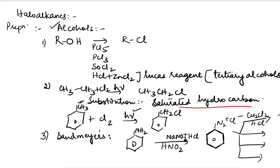For example, to prepare chlorobenzene we use Cu2Cl2 and HCl. To prepare bromobenzene we use Cu2Br2 plus HBr. To prepare a cyanide (CN) compound we add Cu2Cl to get CN. Very importantly, if I want fluorine, I add HBF4.